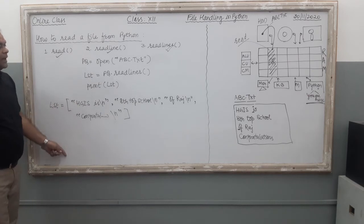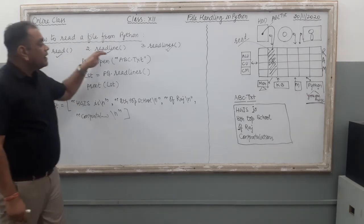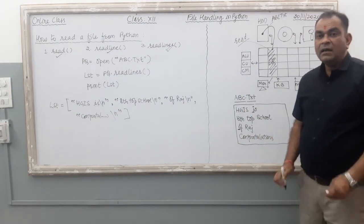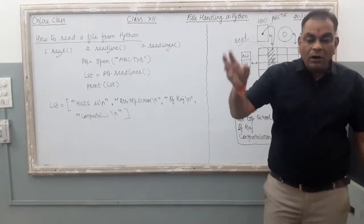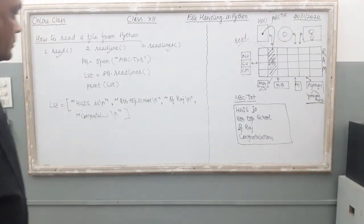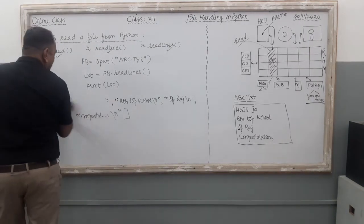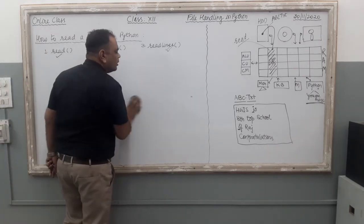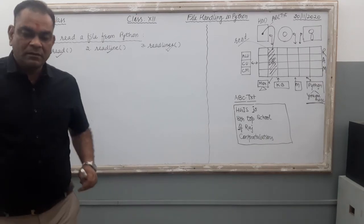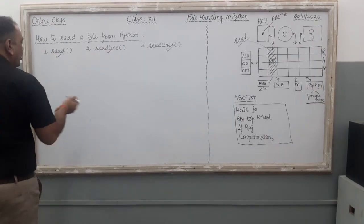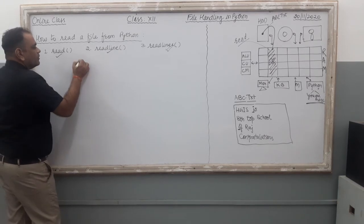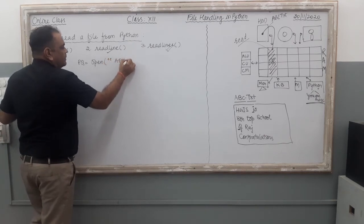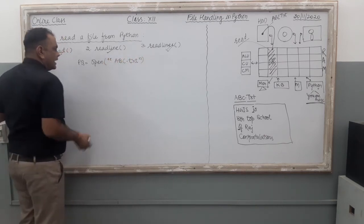These are the read file functions we can use for reading a file. The next thing is you can also read the whole file using a for loop. If you want to read the whole file, use: `pq = open('abc.txt', 'r')`, then `for x in pq`. The for loop with a file object reads the file line by line.